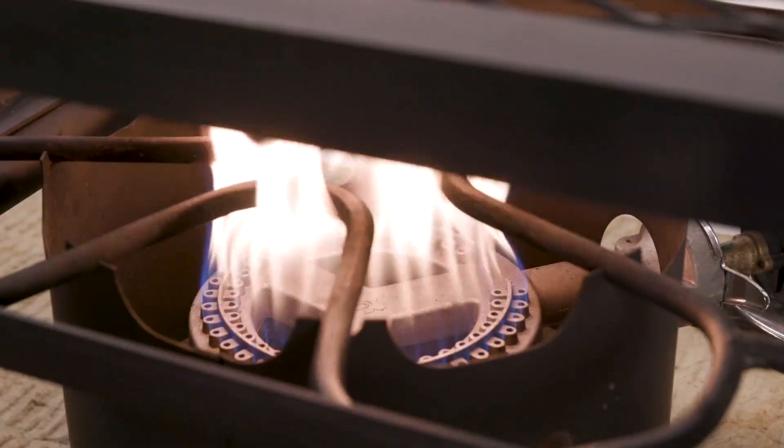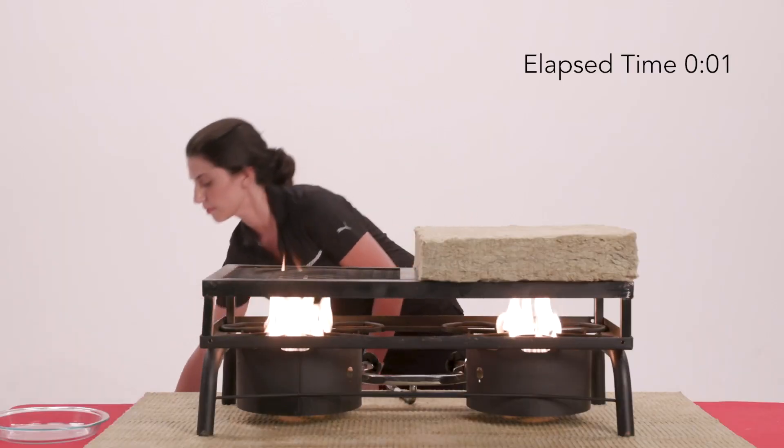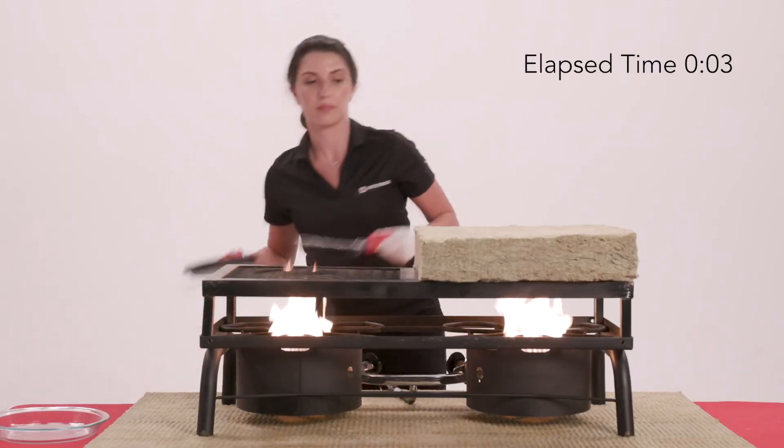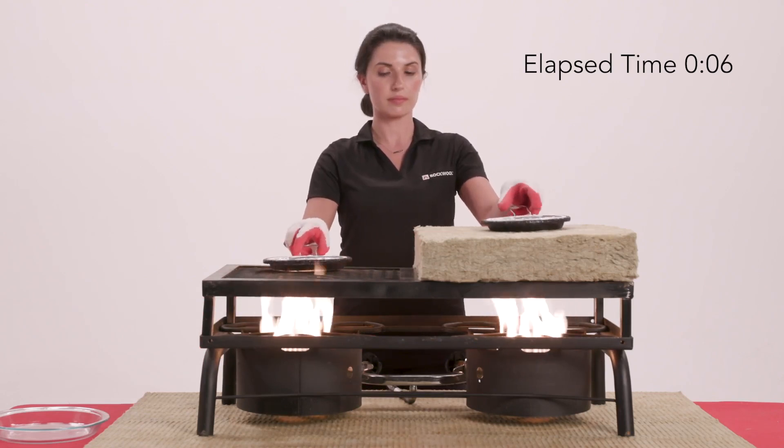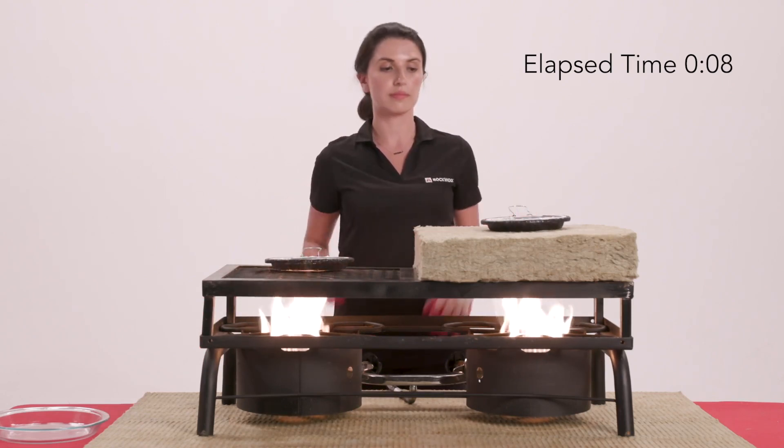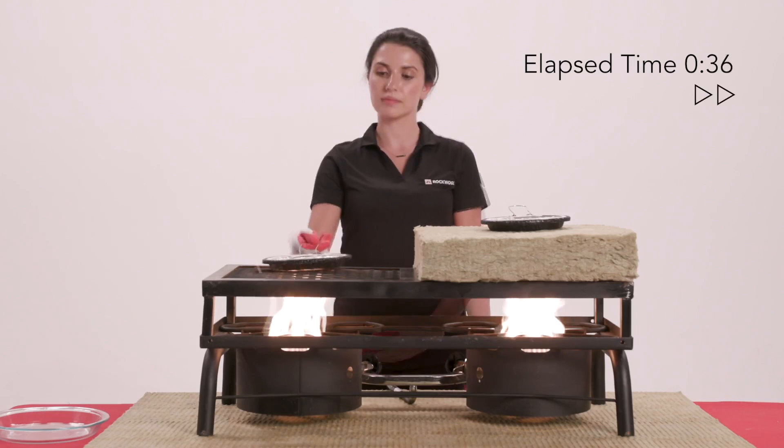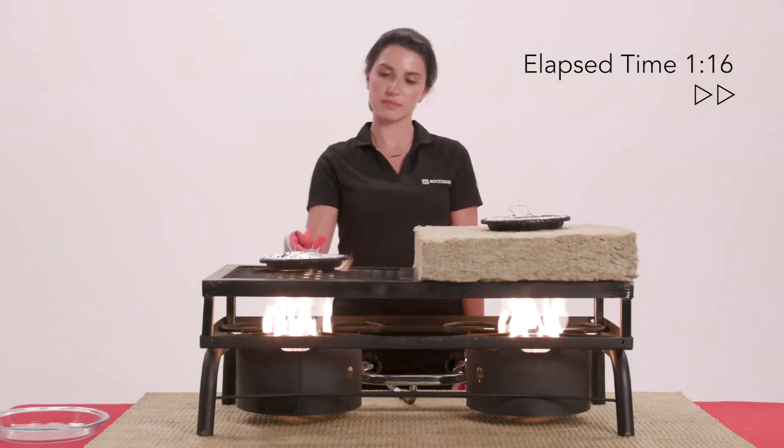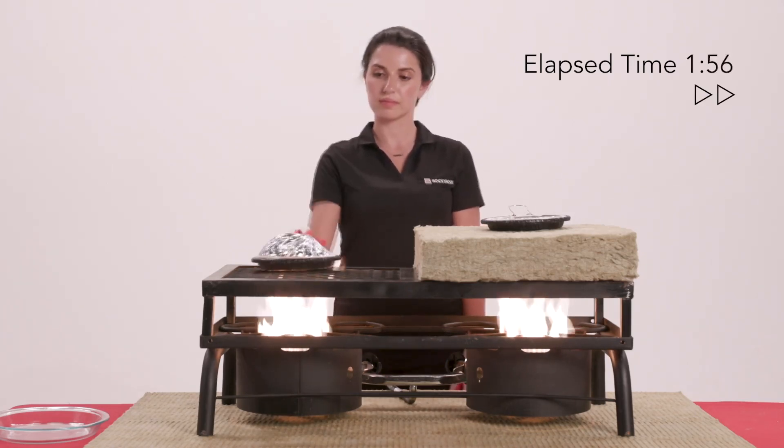Because it won't burn or release toxic smoke, Rockwool stonewool insulation products may act as a barrier to fire and slow the spread of flames. We demonstrate this by placing stovetop popcorn on top of the Rockwool stonewool insulation and a second directly on top of a burner.